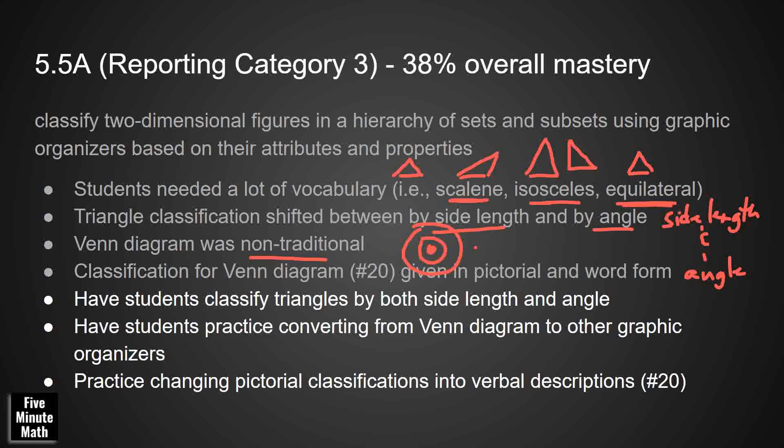And then what made the other one difficult, number 20, was the fact that it was given in both pictorial and word form. And the pictorial form, I think that was the problem, understanding that it was a parallelogram. So down here in white, what we have are our instructional considerations. So what does this mean for us as educators? We just need to get into the practice of making sure our students are comfortable classifying any triangle they see by both side length and angle. Every single time, even if it's just asking for side length, make them name acute, obtuse, or right as well.